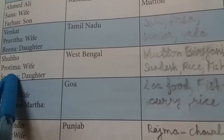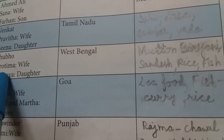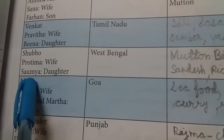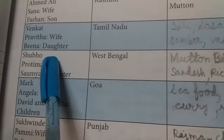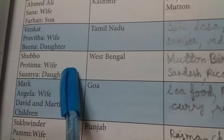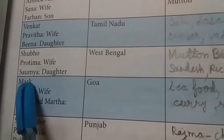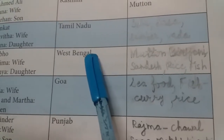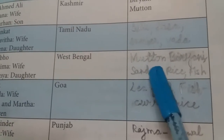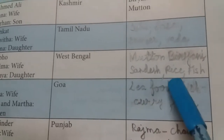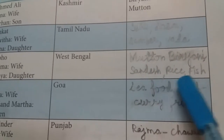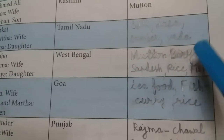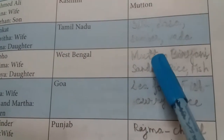The third family: husband's name is Shubhu, wife's name is Pratima, and daughter's name is Somya. They belong to West Bengal. Their favorite food is Mutton, Biryani, Sandesh, Rice, and Fish. West Bengal के लोगों का favorite food Rice और Fish होता है, और वे Biryani और Mutton भी खाते हैं।